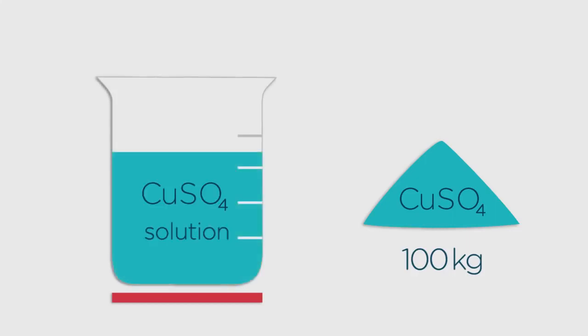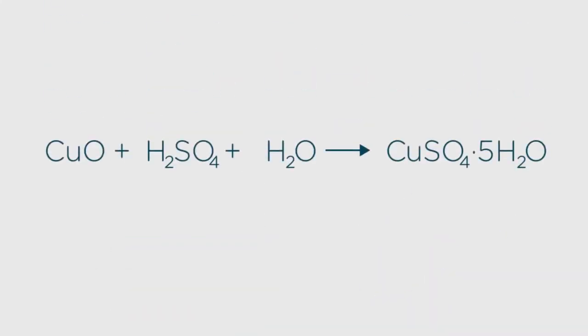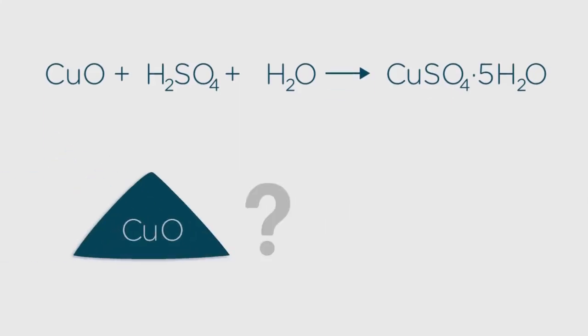This will produce copper sulfate solution from which we can get the blue hydrated copper sulfate crystals that you might be familiar with. Here's the problem though. How do you know what mass of copper oxide to place in your tub of acid?